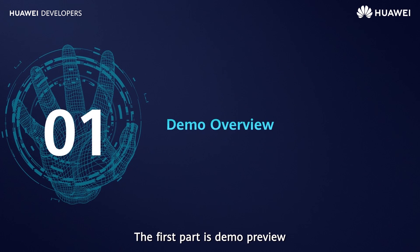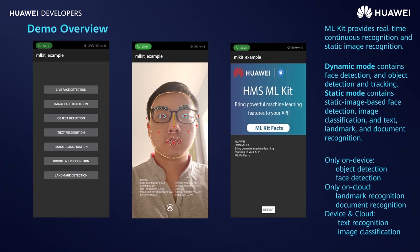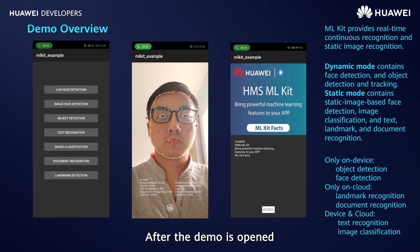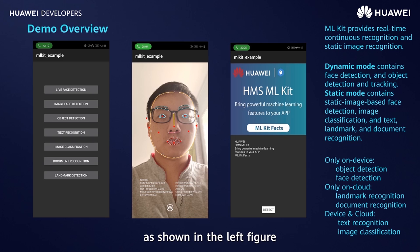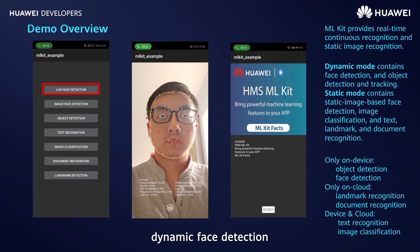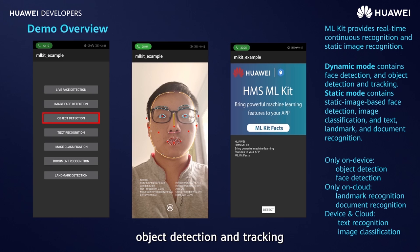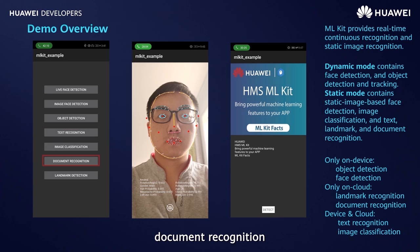The first part is demo preview. After the demo is opened, the page for selecting each function is displayed. The demo provides seven functions: dynamic face detection, static face detection, object detection and tracking, text recognition, image classification, document recognition, and landmark recognition.